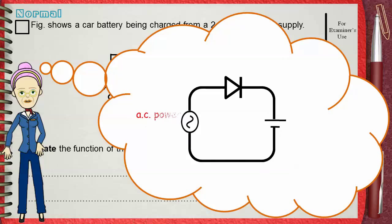You have an AC power source and a DC battery to be charged. This needs a diode. You cannot charge a DC battery using an AC power source. That's why we need a diode — to change the AC from the power source to DC that will be suitable to charge the battery. But there is another function.